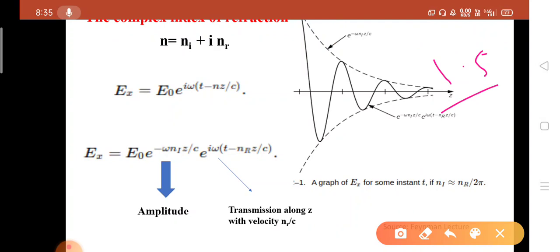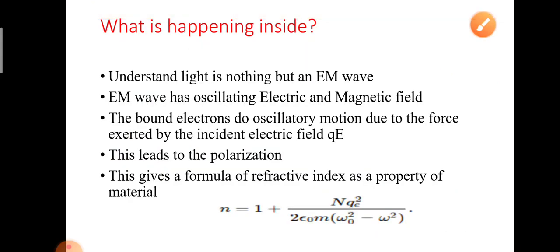At frequencies outside the visible range, the transparency of glass can differ because the refractive index is wavelength-dependent (ω-dependent). Changing the incident frequency ω changes the refractive index depending on how close ω is to the natural frequency ω₀ of the bound electrons. In the visible region, the incident frequency cannot drive large oscillations in the bound electrons, so absorbance is much lower, and light transmits easily through glass.